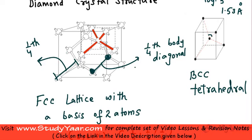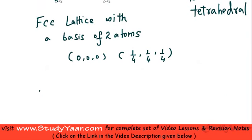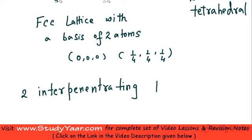Another way to visualize the diamond crystal structure is to assume that it is a combination of 2 interpenetrating FCC lattices.